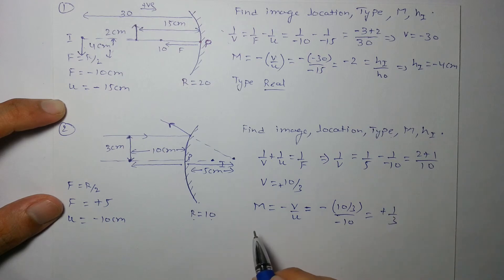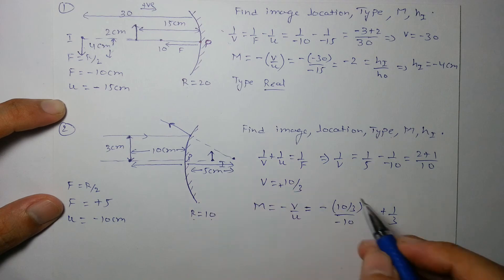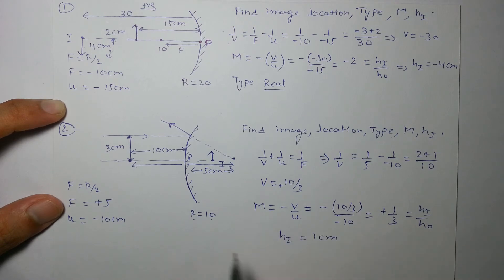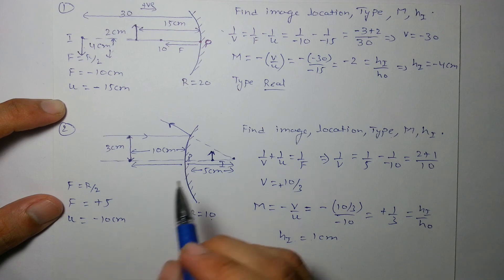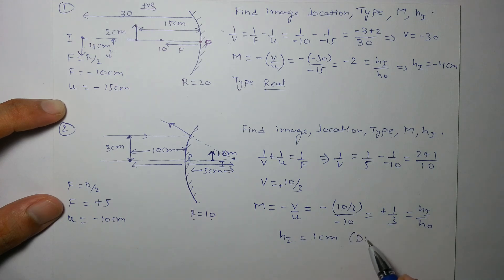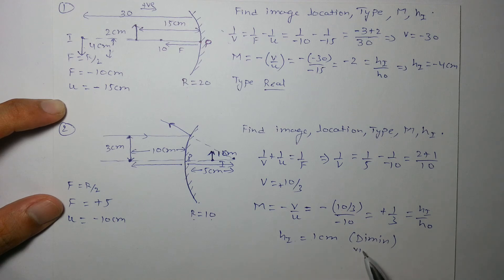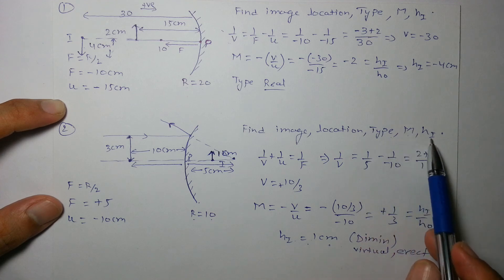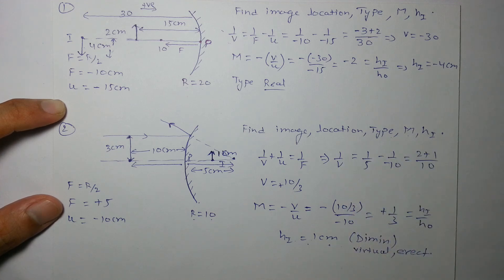Magnification = +1/3, so hᵢ/hₒ = 1/3. Since hₒ = 3 cm, hᵢ = 1 cm. The positive sign means the image is above the principal axis — erect. The image is diminished, virtual, and erect, as expected for a convex mirror with the object in front.